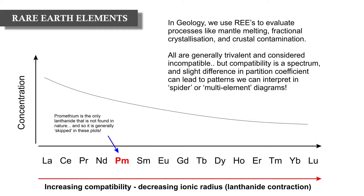In geology we use rare earth elements to evaluate processes such as mantle melting, fractional crystallization and crustal contamination. All the elements are typically trivalent and each is considered incompatible to some degree. We present these elements on spider diagrams, or multi-element diagrams, with lanthanides along the x-axis in order of increasing atomic number, increasing compatibility, or decreasing ionic radius. The y-axis shows concentration, typically normalized to a known reservoir because of the Oddo-Harkins rule.